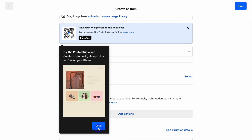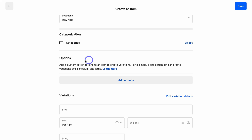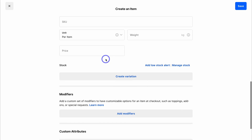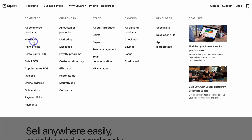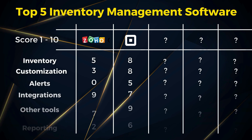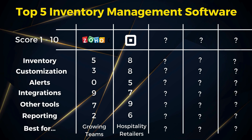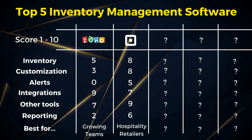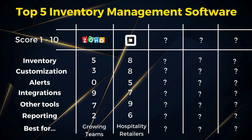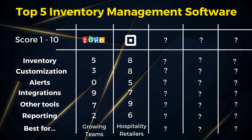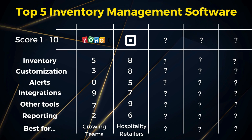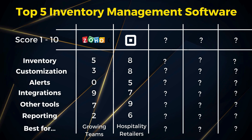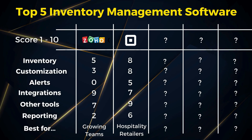You get access to custom sizes, materials, variations and grouping options. You can also manage and capture all payments including subscriptions from inside Square's free plan. The free plan allows you to track sales and stock levels in real time, get important alerts for stock levels, and you can easily integrate Square with your other favorite tools. Square as an inventory management software is best for hospitality-based businesses and physical retailers.